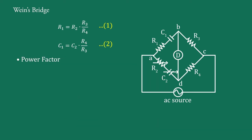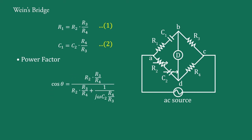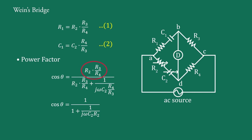Next, power factor cos θ. For the R1-C1 series connection, power factor is defined as cos θ = R1 / |Z1|, where |Z1| = R1 + 1/(jωC1). Putting the values of R1 and C1 from Equations 1 and 2, and transferring the numerator terms to the denominator, we obtain cos θ = 1 / (1 + 1/(jωC2·R2)).